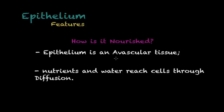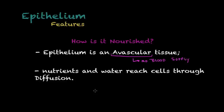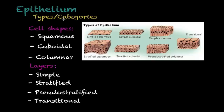You could ask how epithelium gets its nutrients and water. Epithelium is a very special case because it is an avascular tissue, meaning it has no blood supply. So how is it nourished? Epithelium is usually in direct contact with the environment or underlying connective tissue, and the way nutrients and water reach this tissue and move around its cells is through diffusion.